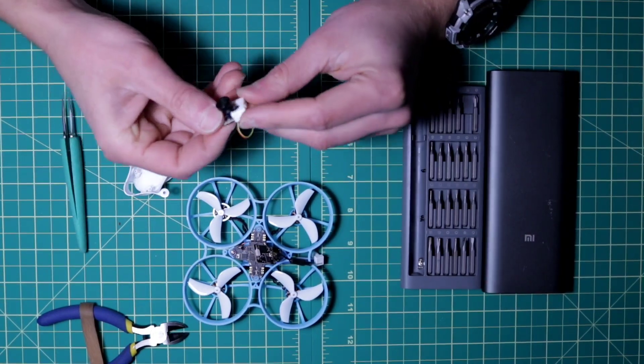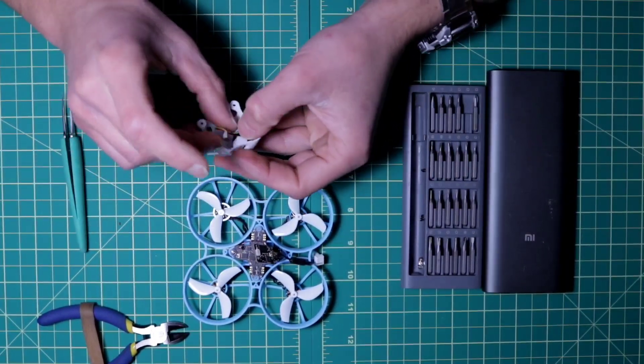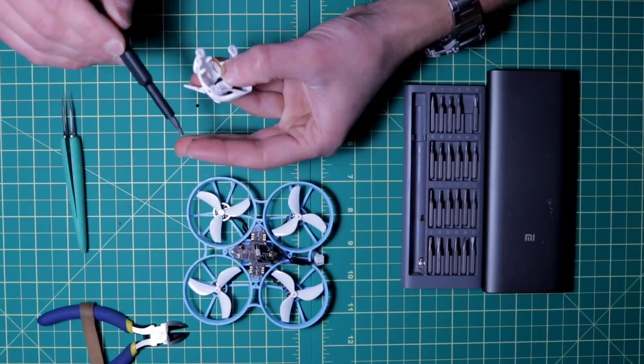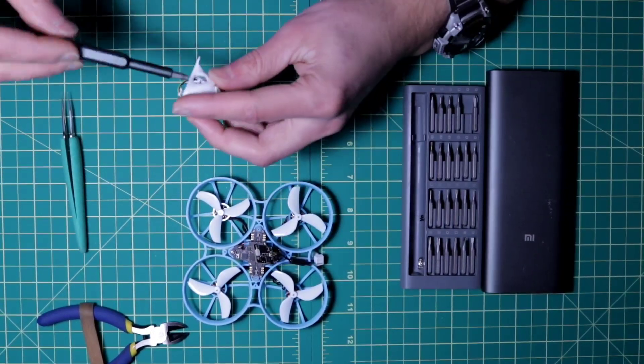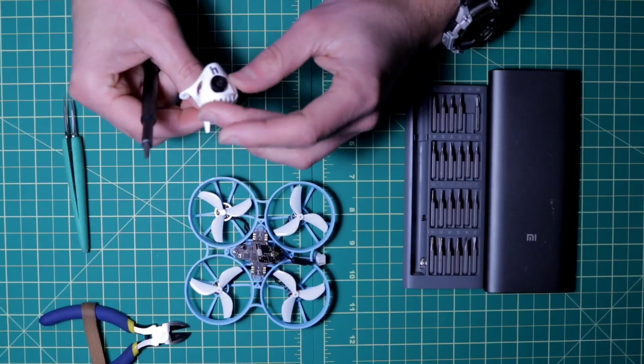Now we have to assemble all parts together and put it correctly. First start with camera. Wires in the bottom. Put the camera inside of the canopy and tighten the two screws back. Do not over tighten as this could damage the camera mount.